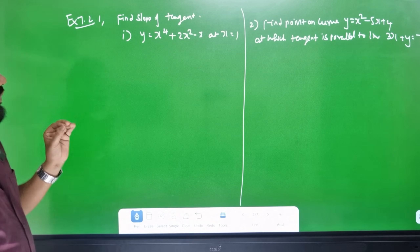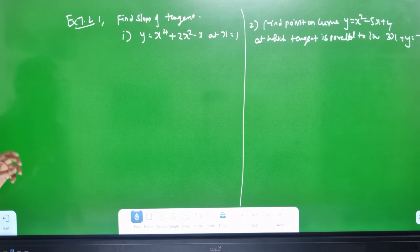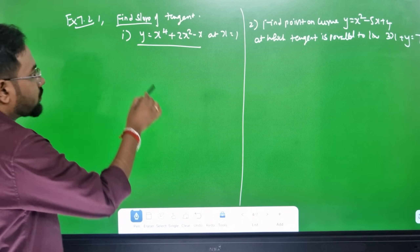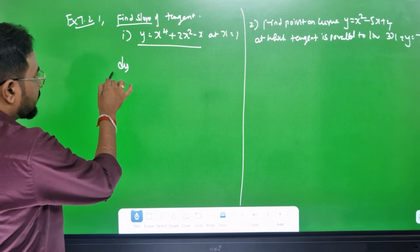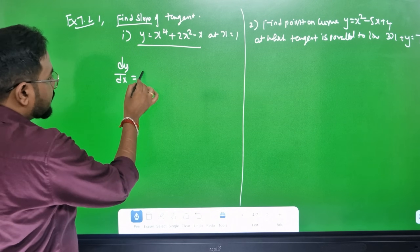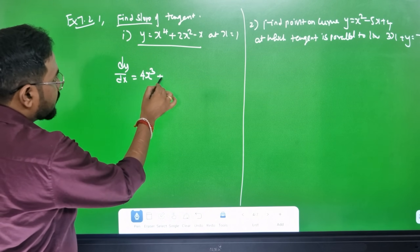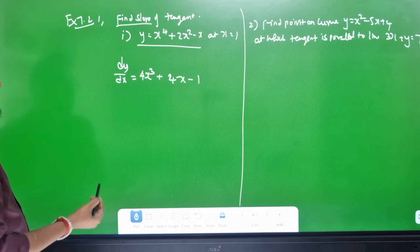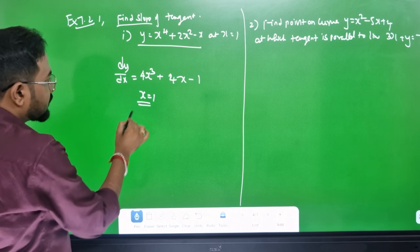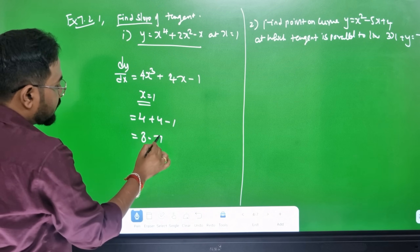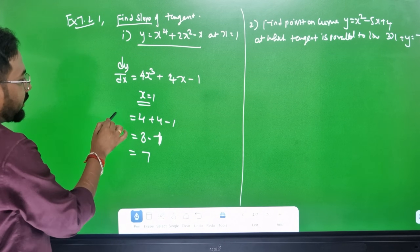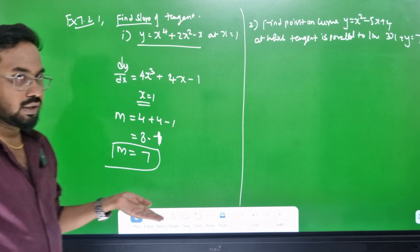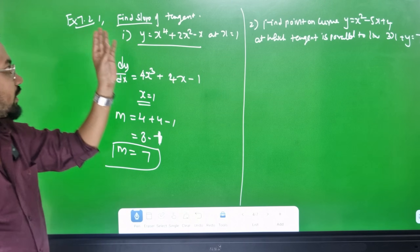Find the slope of the tangent. Given a curve and a given point, the slope is dy by dx. This is the tangent equation: dy by dx. Differentiate y: dy by dx of 4x⁴ differentiated is 4x³, plus 2t equals 4x. With x equals 1, substitute: 4 plus 4 minus 1 equals 8 minus 1. dy by dx, nothing but m, m equals 7. The slope is 7.